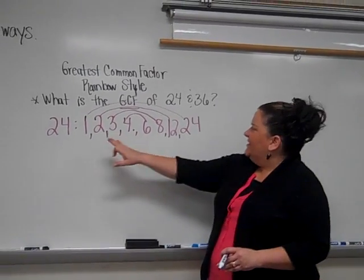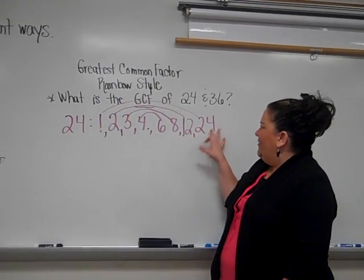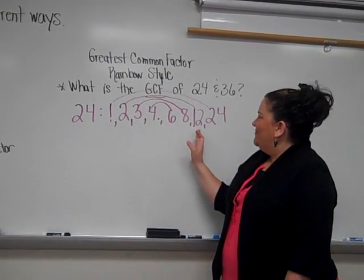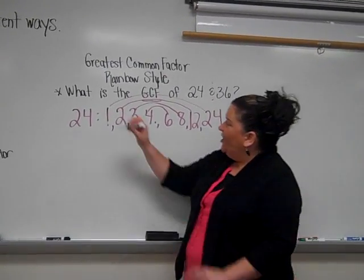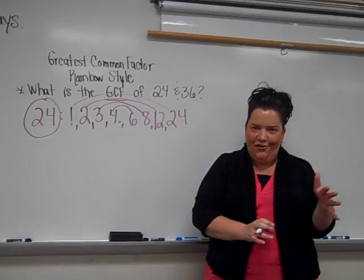It's easy to use this method because you can say 1 times 24 is this product of 24, 2 times 12 equals this product. Now we've done our 24 factors, and now we have to do the factors for 36.